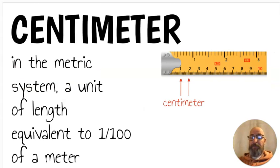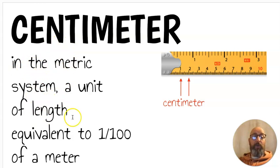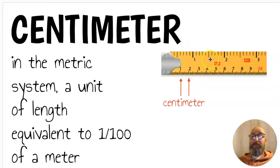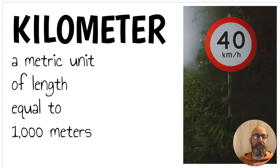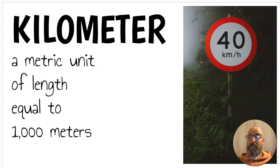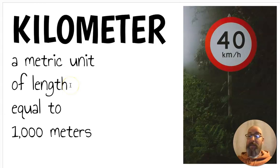Next we have centimeter. A centimeter is in the metric system — not the customary system — and it's a unit of length equivalent to one one-hundredth of a meter. Centi means hundred. If you're ever using a ruler, you see the bigger spaces on top and the smaller spaces on bottom — those are centimeters. Next, a kilometer is also a metric unit of length equal to a thousand meters. Kilo means thousand. We might measure distances by miles, but in the metric system they do it by kilometers.